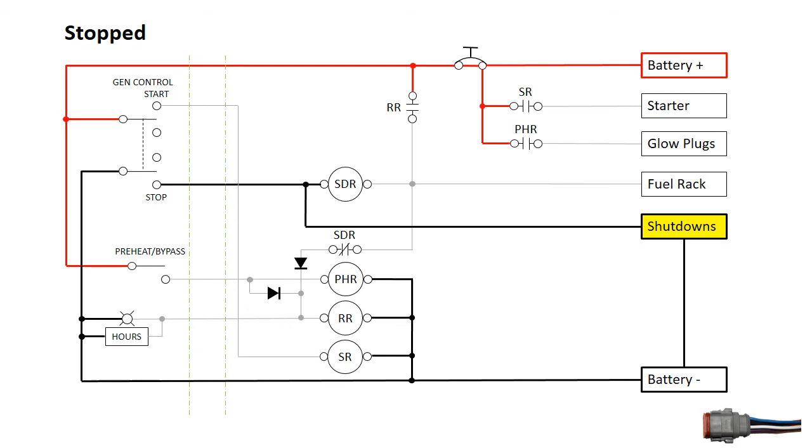One last thing. If your generator uses an S3 control panel with engine gauges, you will find an additional relay mounted on the back of the panel. The reason for this is the blocking diode.